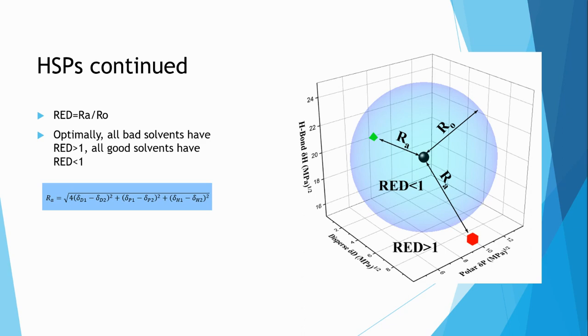To answer this question, Hansen presented a sphere model plotted in HSP space to represent the entire solubility of a species. In this model, the Ra value of a solvent gives the distance in HSP space between that solvent and the species in question, and we can see the equation to determine the Ra value in the equation below.